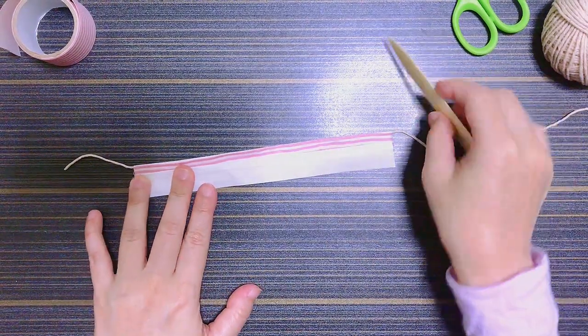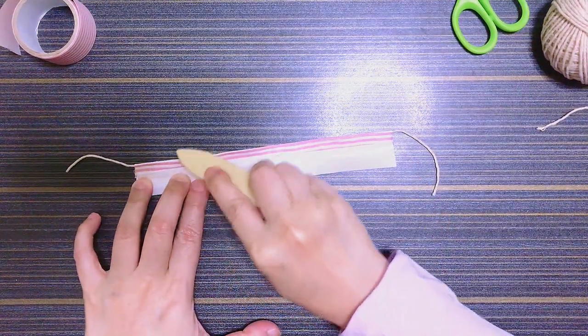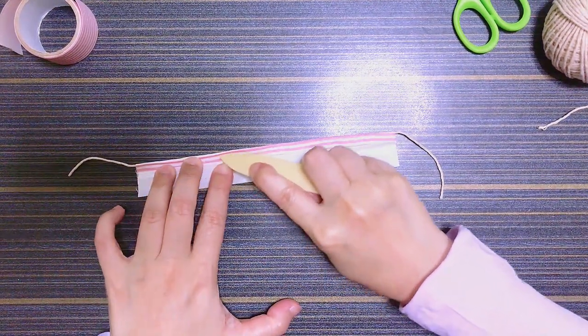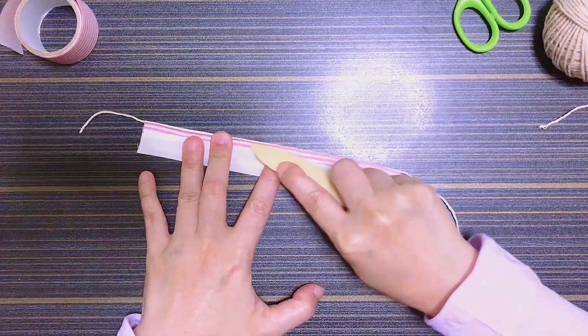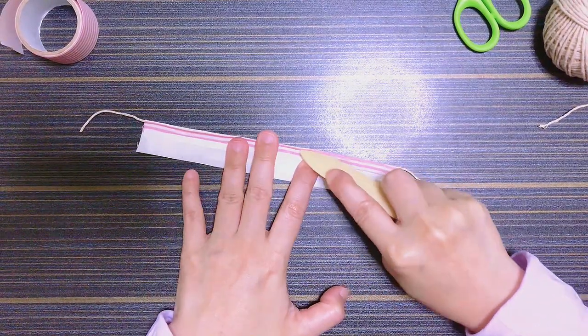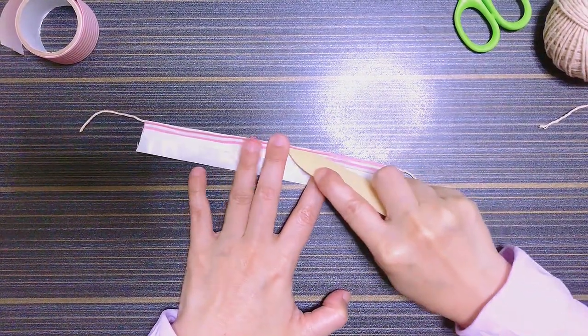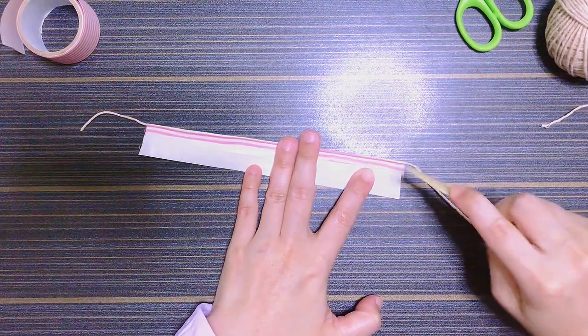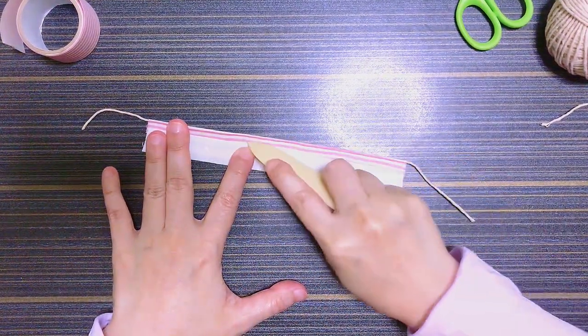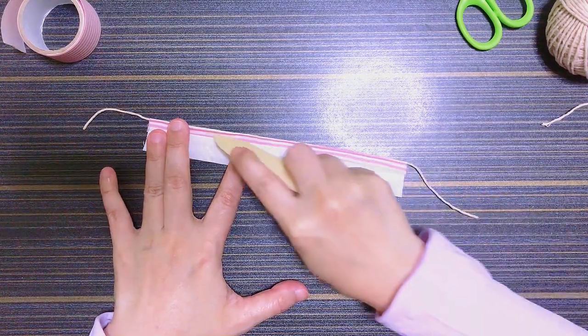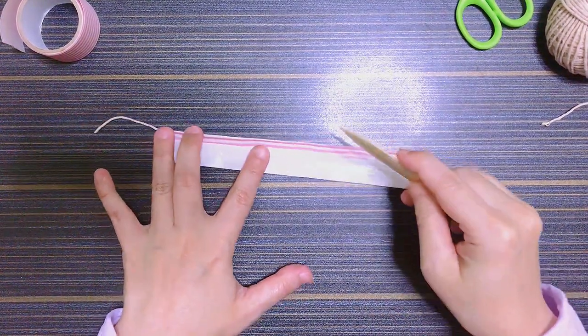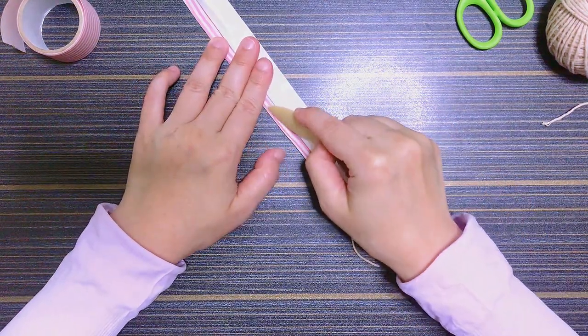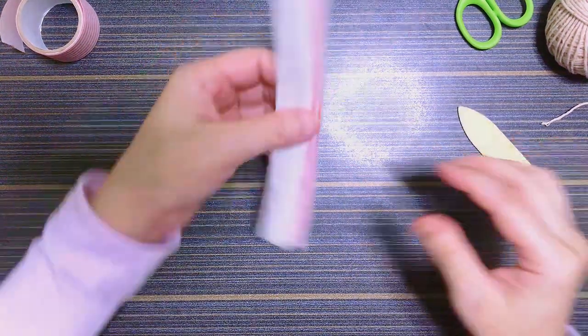Now with the pointy tip of my bone folder, I'm going to push the pasted fabric, making sure the twine is wrapped tightly at the top corner there. Doing it a few times to ensure it's tight. And that's it!